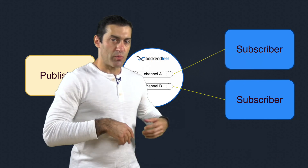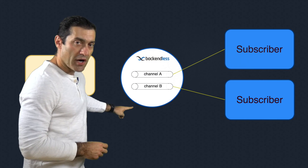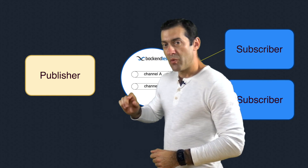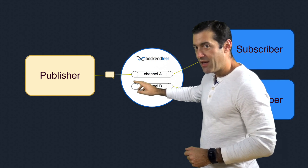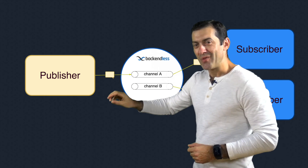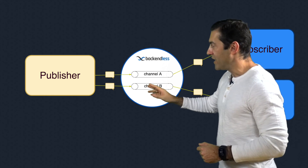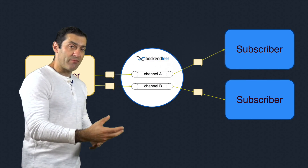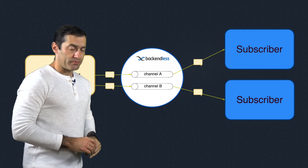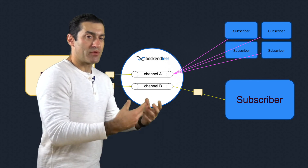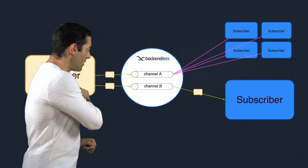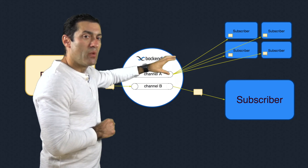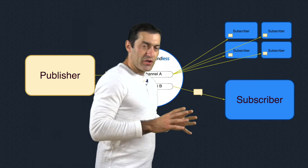Subscribers, whenever they express interest to receive messages, can subscribe to receive messages published to either channel A or channel B. Whenever a publisher sends a message to channel A, the subscribers subscribed to that channel will receive that message. Likewise, when a message is sent to channel B, any subscriber subscribed to channel B will receive those messages. You could have more than one subscriber subscribing to a particular channel, and all of them will receive the message. This is channel-based delivery.